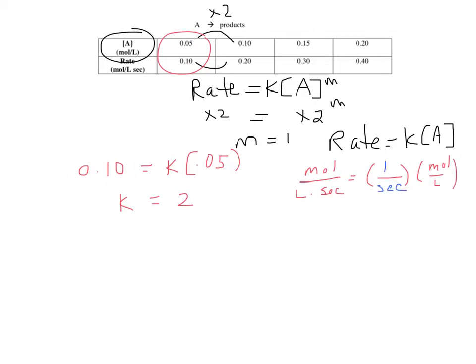So K is 2, 1 over second, or 2, second to the minus 1. And that's how you figure out the order of reaction when there's a single reactant. In the next video, I'll show you what to do when there's more than one reactant.